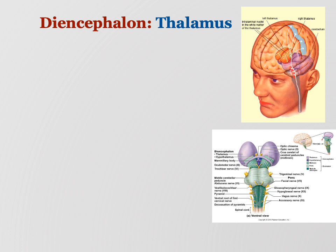The diencephalon is the communication command post between the cerebrum and the brainstem. The brainstem was doing all that survival stuff. The cerebrum is all the emotions and memory and thinking and so on. The two have to talk to each other, and that happens in the diencephalon — this is where the brainstem and cerebrum communicate with each other.